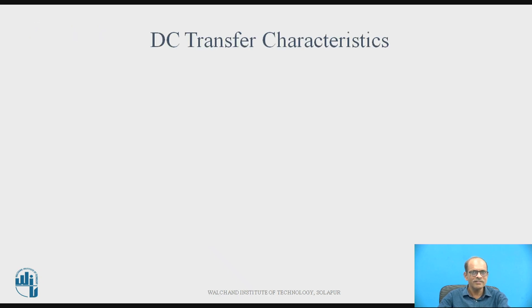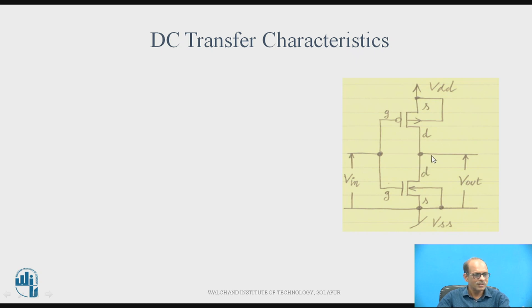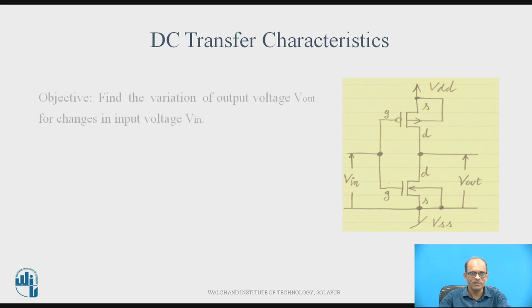What is the DC Transfer Characteristics of CMOS Inverter? This is the circuit of CMOS Inverter. This is a PMOS and this is a NMOS. The gate of two MOSFETs are connected together — that is the input — and the drain of two MOSFETs are connected together — that is the output. The substrate of PMOS is connected to VDD and the substrate of NMOS is connected to ground, that is VSS.